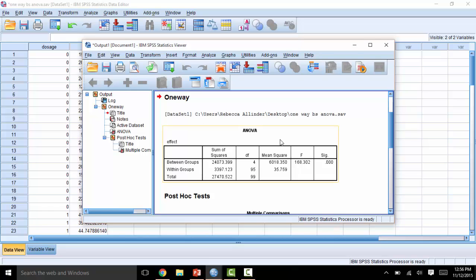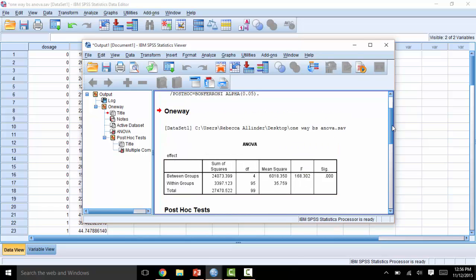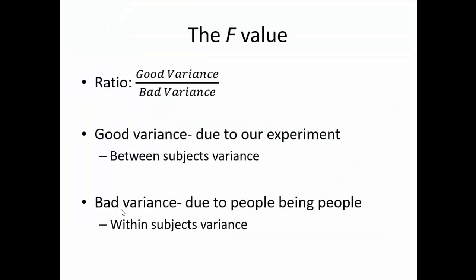And there's your ANOVA. Here's how to interpret this mess of numbers. The ANOVA will give us an array of information, including the f-value. The f-value is a ratio of good variance to bad variance. Good variance is the variation of scores that is due to our experiment, or the variance between the means. Bad variance is the variation of scores that is due to the peopleness of people, or the variation of scores within each group, or what we usually just call individual differences.